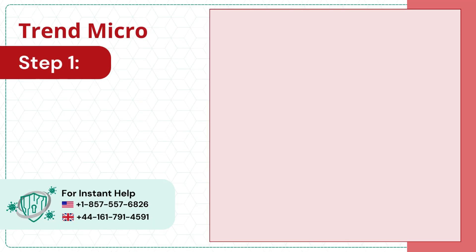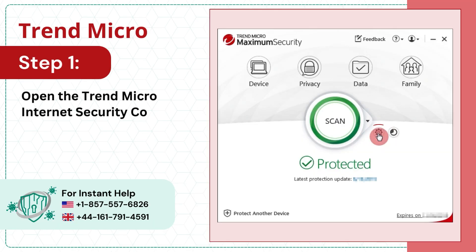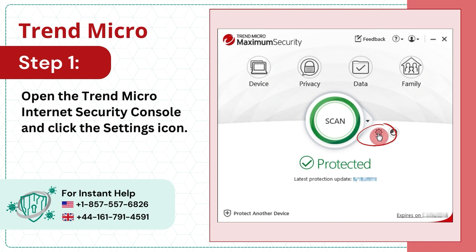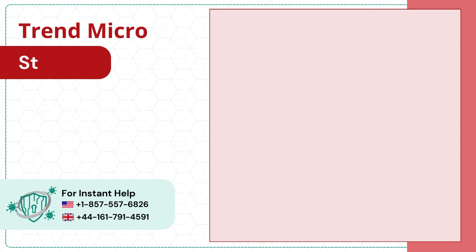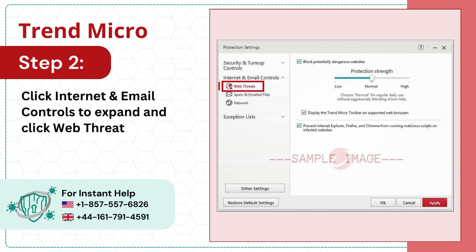Step 1: Open the Trend Micro Internet Security Console and click the Settings icon. Step 2: Click Internet and Email Controls to expand, and click Web Threats.